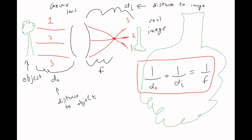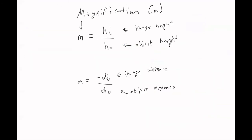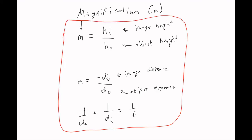These two magnification equations, along with the other one written earlier relating the distances and the focal length, are together called the thin lens equations. If you see in a problem that it says 'a thin lens,' that's just telling you that these equations will apply. If you have something that's not a thin lens, then there would be some other physics going on, and we're not going to do that in this class.